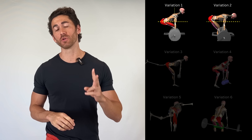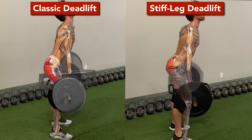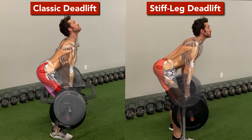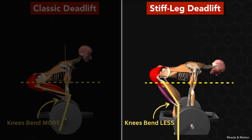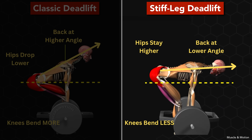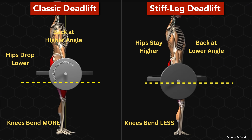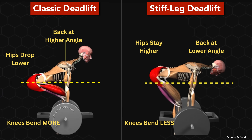To break down deadlift anatomy, we're going to use the two most common deadlift variations: the classic deadlift and the stiff leg deadlift. The difference being that with the stiff leg deadlift, you bend much less at the knees, keeping your hips higher and your back drops down to a much lower angle. We'll go over these differences and their effects on how each muscle is worked throughout the video.